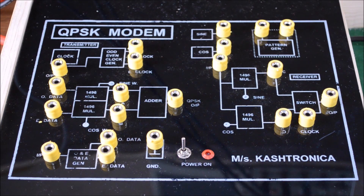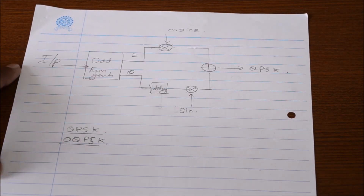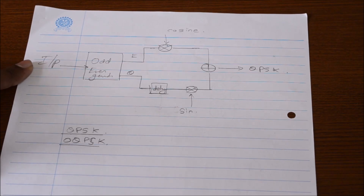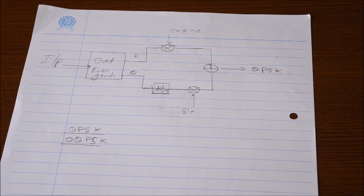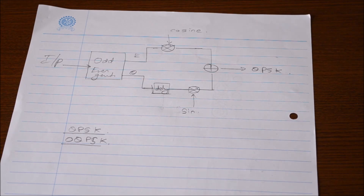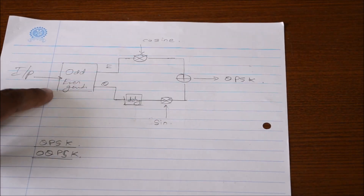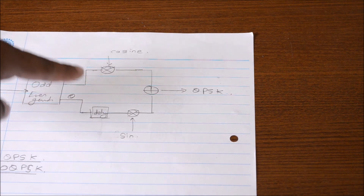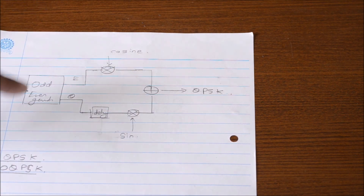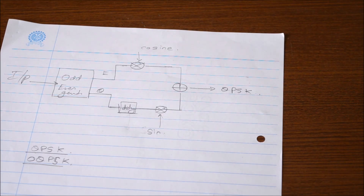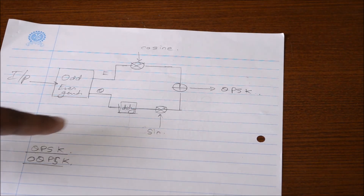Let us have a look at the block diagram of QPSK modem. The input binary data is divided into 2 parts called odd data and even data. These are further multiplied with 2 different carrier waves — one with a cosine wave and one with a sine wave. Precisely, the even data is multiplied with the cosine wave and the odd data is multiplied with the sine wave. This generates 2 different BPSKs which are then added to generate a QPSK.